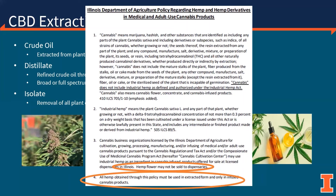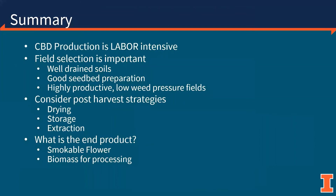The Illinois pilot program states that you are responsible to purchase, grow, process, and sell materials which test below 0.3% delta-9 THC threshold, and has been extended through the 2021 growing season. In summary, CBD production is going to be typically labor intensive. Field selection is incredibly important — well-drained soils, good seedbed preparation, and highly productive fields with low weed pressure. You want to really consider your post-harvest strategies for drying, storage, and where you're going to get this material extracted. The end product — smokable flower or biomass for processing and extraction — will ultimately dictate how you are planting and harvesting this material.